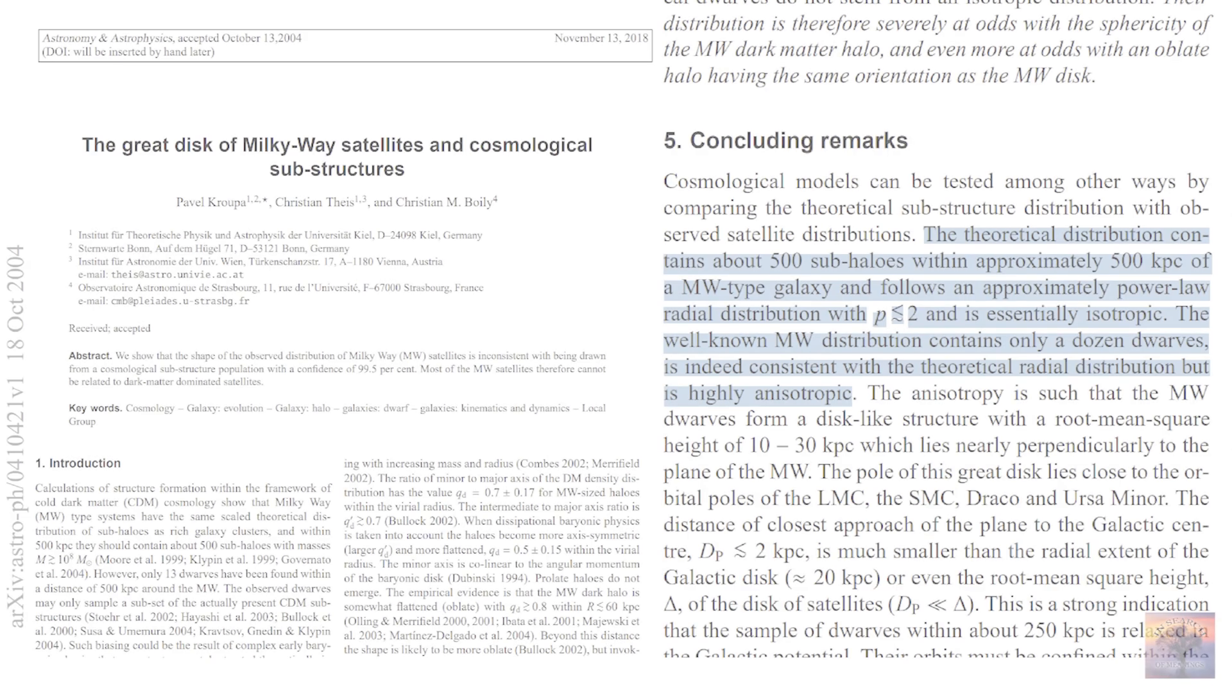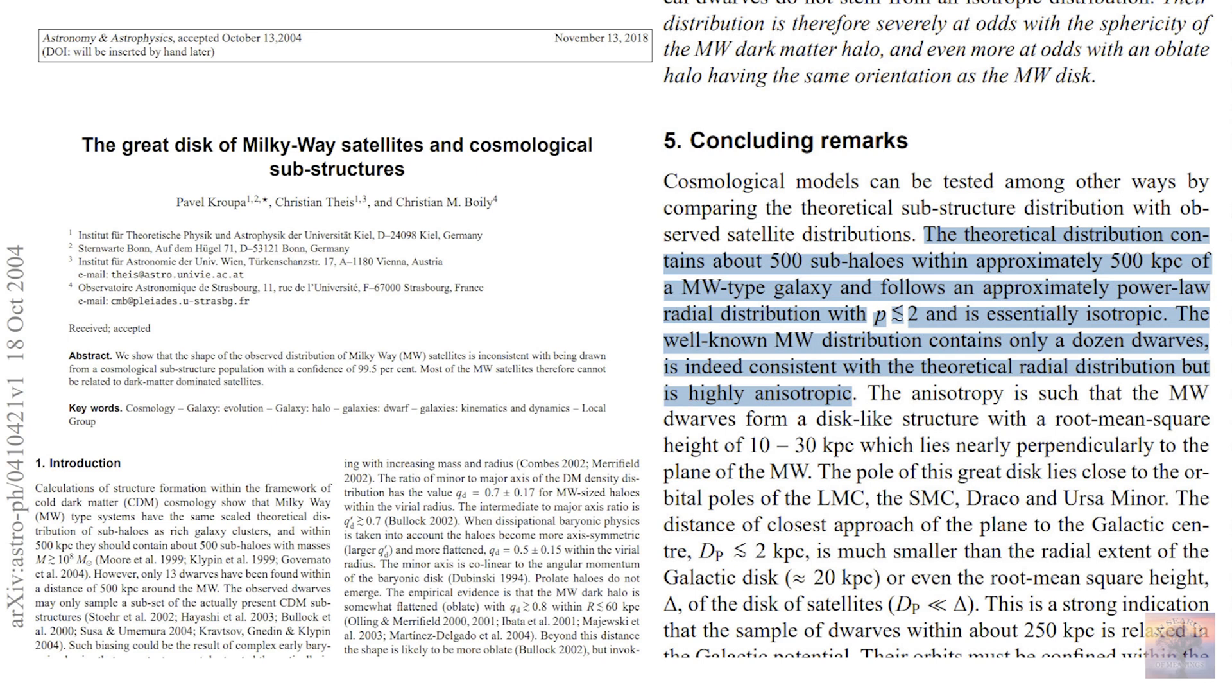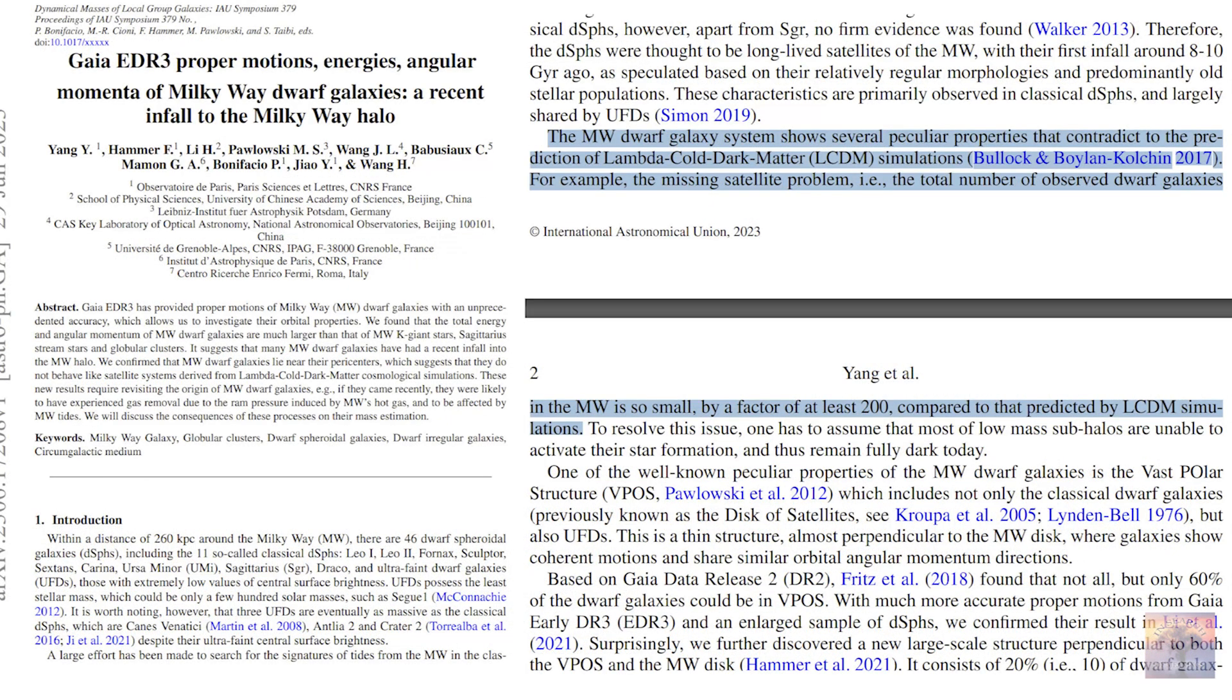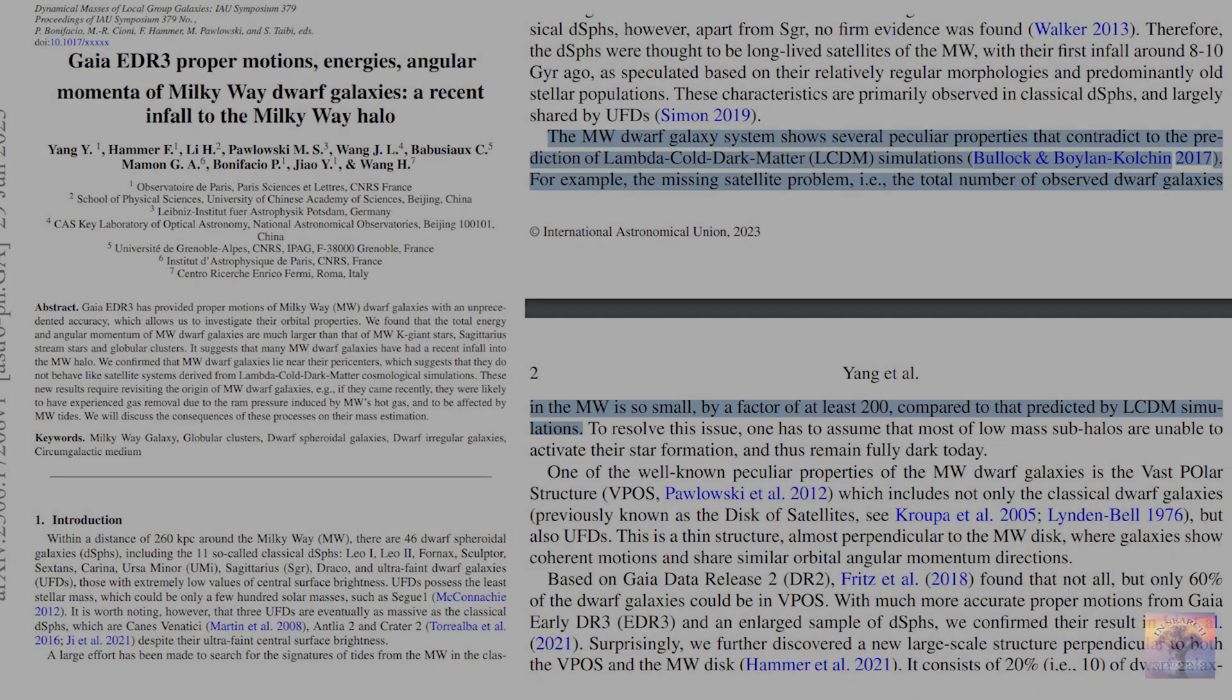In Lambda-CDM simulations, galaxies like ours should have hundreds of dark matter subhalos in which visible matter should accumulate. In other words, a galaxy similar to ours should have hundreds of such satellite galaxies, not tens. And this fact adds fuel to the growing fire of doubt.